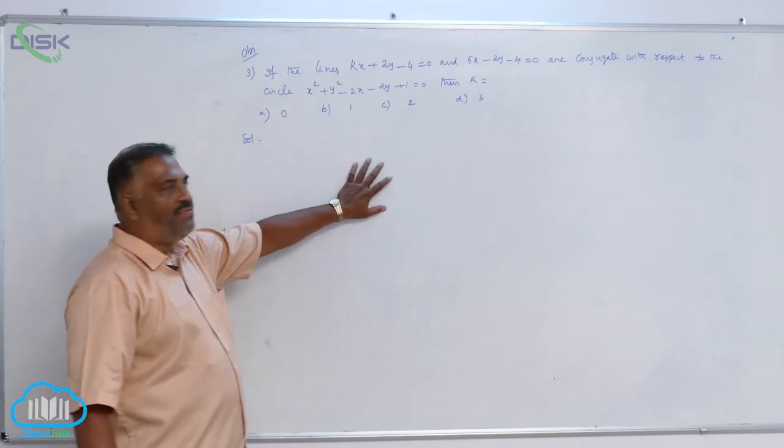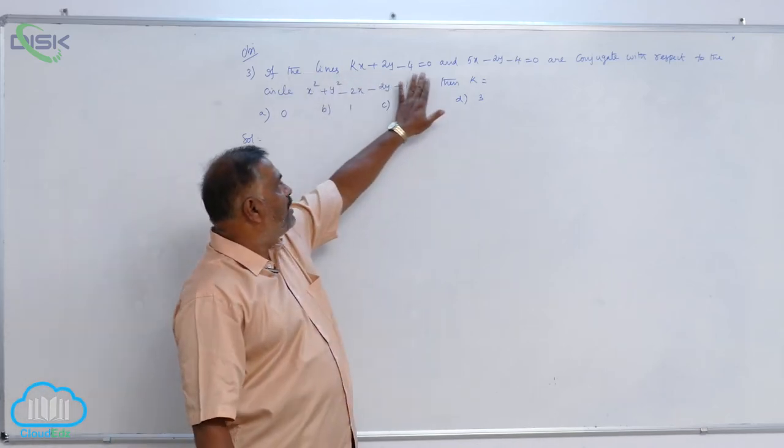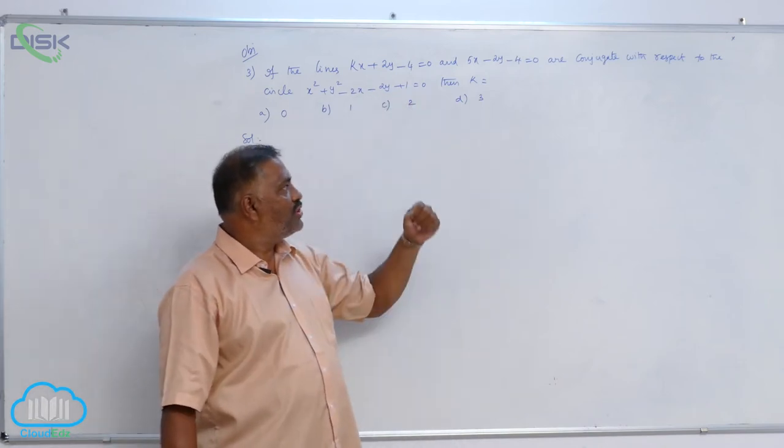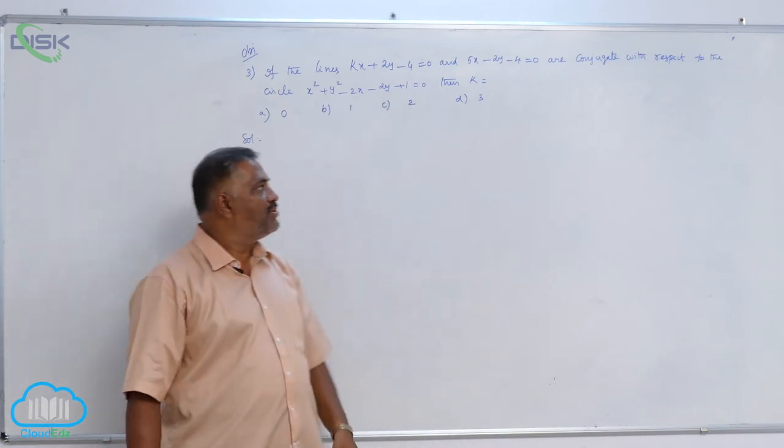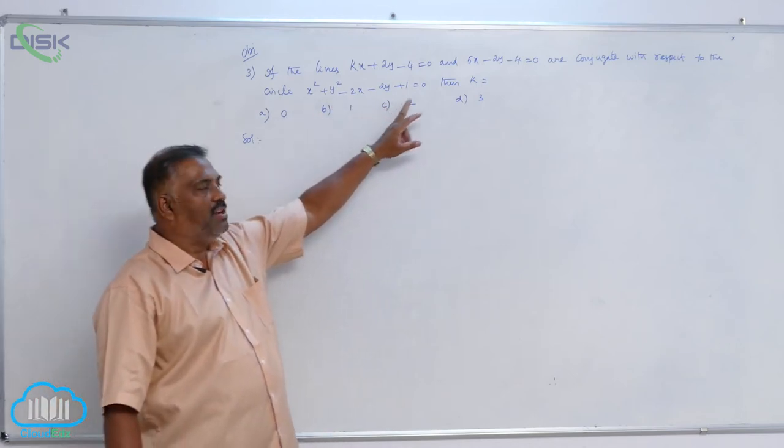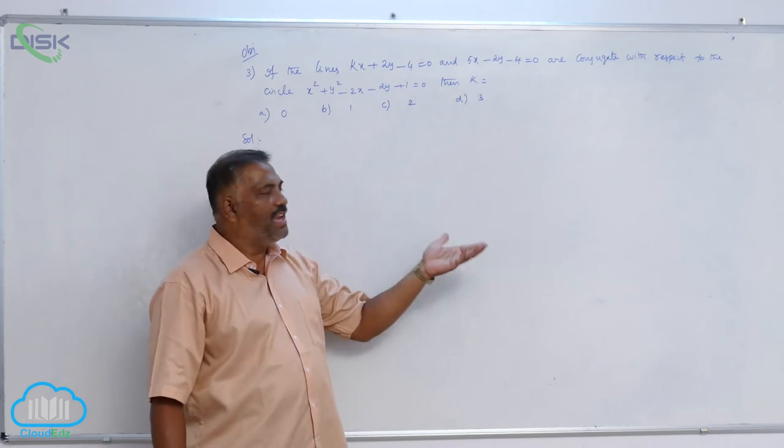We will discuss one more problem. If the lines kx plus 2y minus 4 equals 0, and 5x minus 2y minus 4 equals 0 are conjugate with respect to the circle x square plus y square minus 2x minus 2y plus 1 equals 0, then k is equal to?